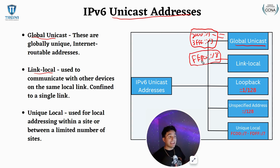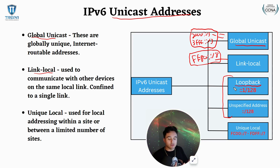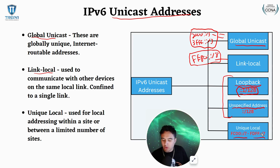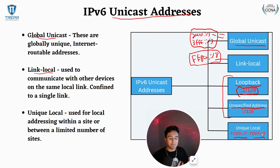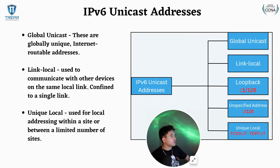We also have reserved IP addresses. We have a loopback address, very similar to the IPv4 loopback — it's used for testing and making sure IPv6 software or addressing is working. Then we have the unspecified address, which is all zeros with a /128. And then we have unique local, which is used for local addressing within a site or between a limited number of sites — it functions like a private IP address and can traverse intranets or different sites within a domain.